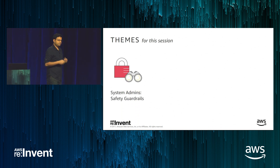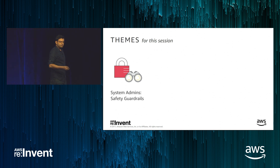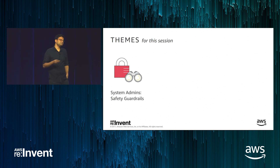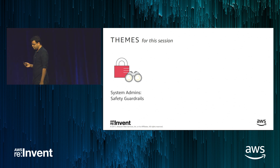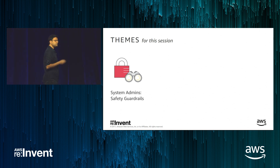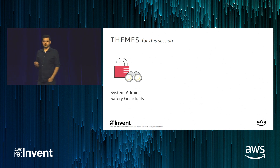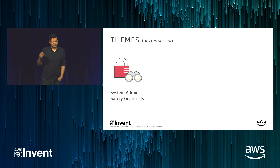Our first theme is actually very close to the system admin space — it's all about safety guardrails. When you have one EC2 instance provisioned on AWS, it's relatively easy to manage. But when you start to scale, you need a few more tools to protect your resources and stacks from accidental deletes or unintentional updates. You also need the ability to monitor changes happening to those resources and stacks. I'll be covering this topic for around 30 to 35 minutes.